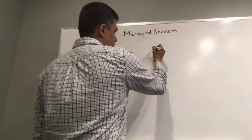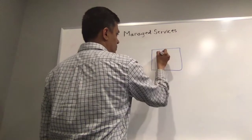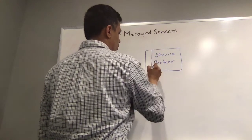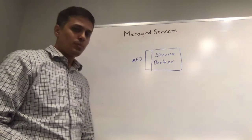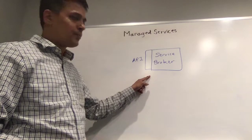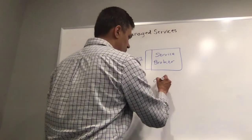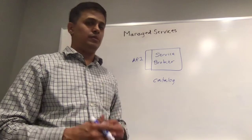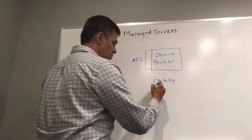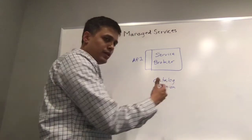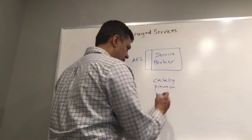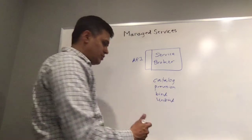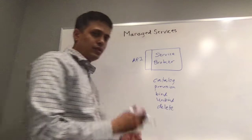For managed services, there is an important component called service broker. The service broker implements what is known as an open service broker interface. That interface is exposed over HTTP and has certain standard functions such as catalog, which is used to describe the various service types and service plans that the service broker has. Provision to create a new service instance. Bind to bind the service instance with an application. Unbind to unbind the service instance from an application, and delete to delete the service instance itself.